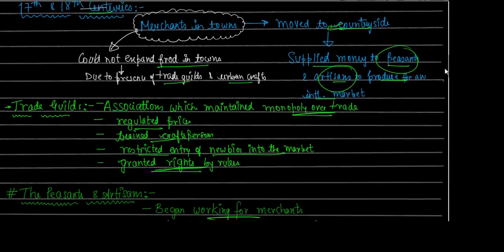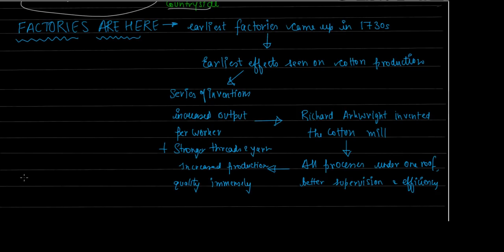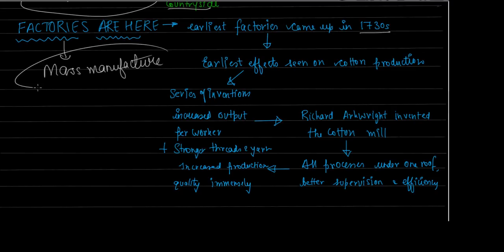Everything we have discussed so far is all proto-industrialization - we have not talked about factories at all. One thing you should have in mind is that industrialization should not be considered synonymous with machines and factories. There was a history of industrialization beyond machines and factories. But finally, in the 1730s, the earliest factories arrived and the idea of mass manufacture came into the industrial business.